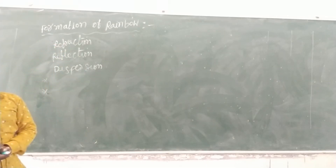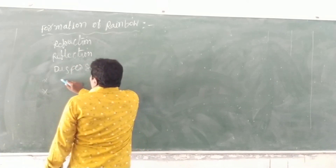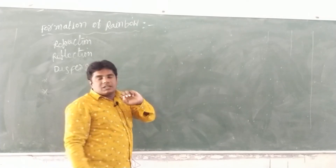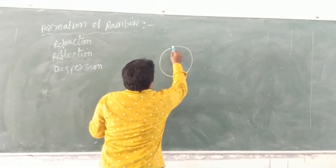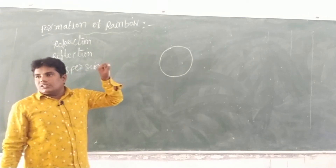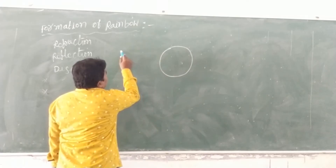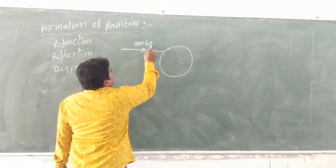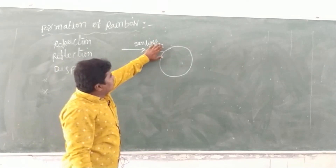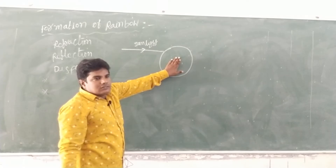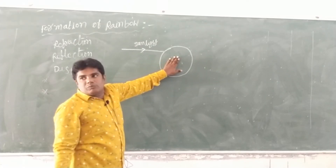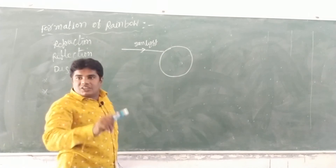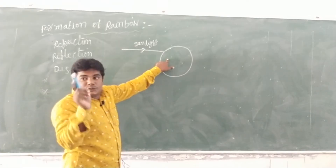Rainbow formation means rain and sun — that means there is a water drop in the sky. I am going to draw a water drop here. Sunlight enters the water drop. The air is a rarer medium and the water drop is a denser medium, so refraction occurs and dispersion begins.